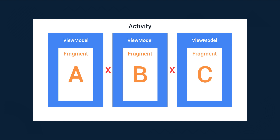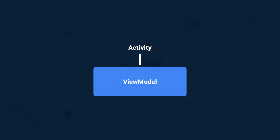For example, if you want to save a simple value in a local variable inside your regular view model which is scoped to fragment A, then you wouldn't be able to retrieve that saved value from fragment B. In order to share values from the same view model instance between multiple fragments, you need to scope the view model to an activity instead.